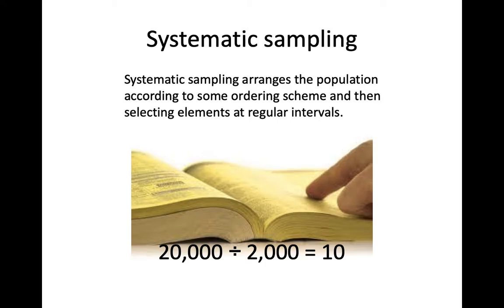To start the sampling process, you take a random number between 1 and 10. Let's say we got a 7 — that would be the first element, and then you take every 10th person after that. Back in the old days, you could take a telephone book from a particular community. If you've got 20,000 people in your town and you want 2,000 people, you start anywhere from the first to the 10th person and then go every 10th person. That's how you do systematic sampling.